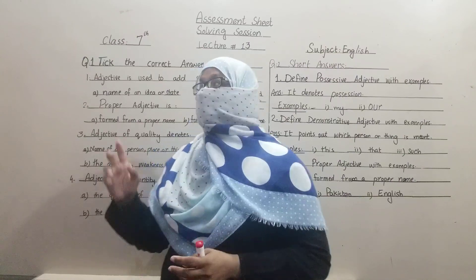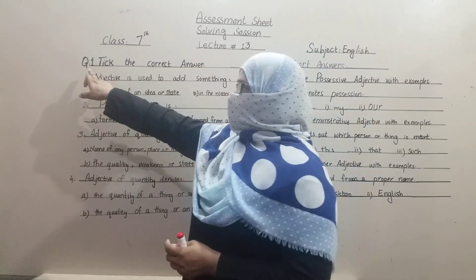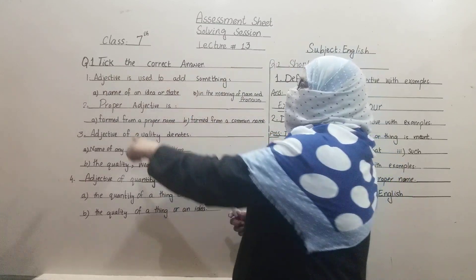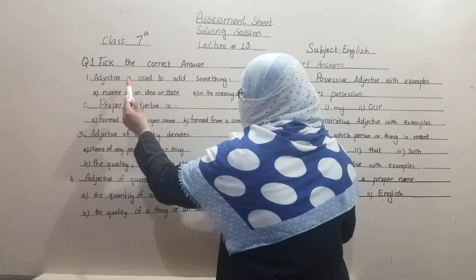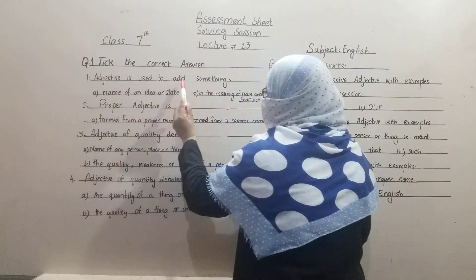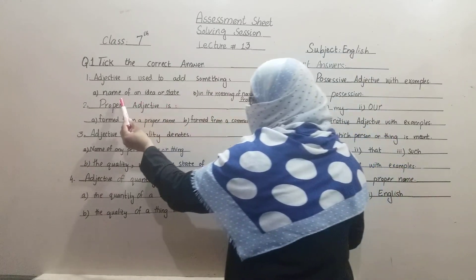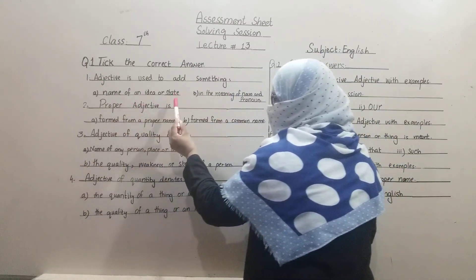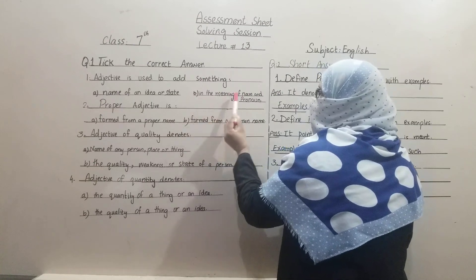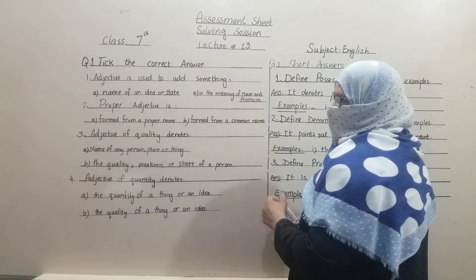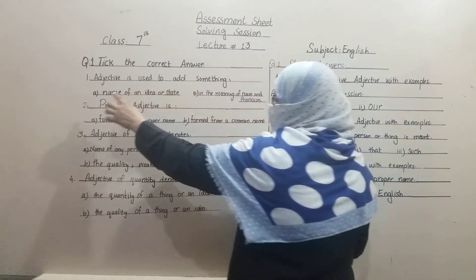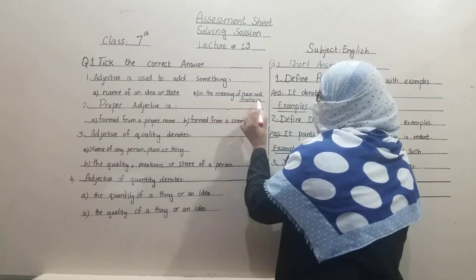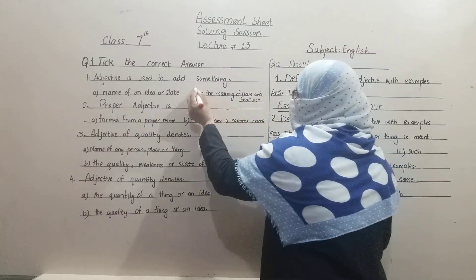Let's see lecture number 13. Question number 1 — take the correct answer. First sentence: adjective is used to add something. Option A: name of an idea or state. Option B: in the meaning of noun and pronoun. The correct option for our first MCQ is: in the meaning of noun and pronoun.